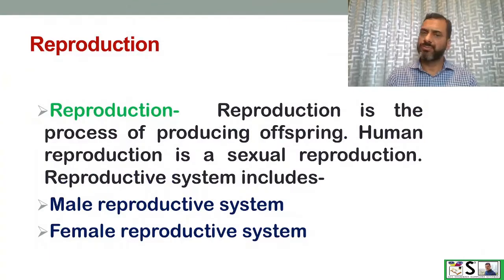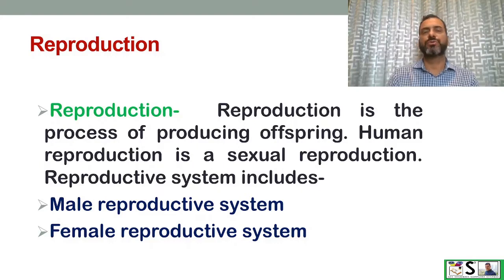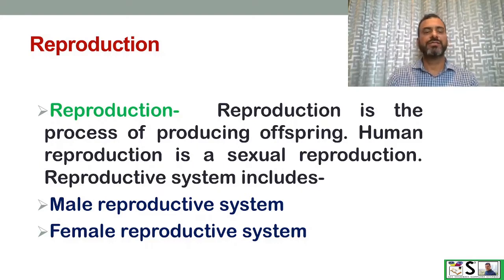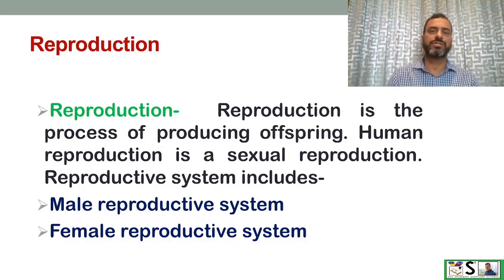What is reproduction? Reproduction is the process of producing offspring. Human reproduction is a sexual reproduction, and it includes the male reproductive system and the female reproductive system. The male reproductive system has already been discussed.